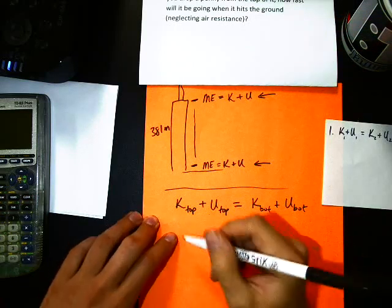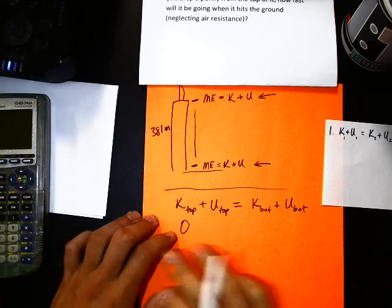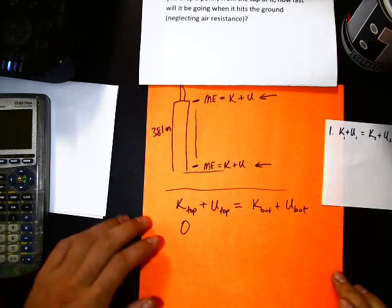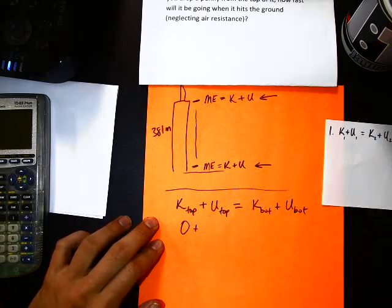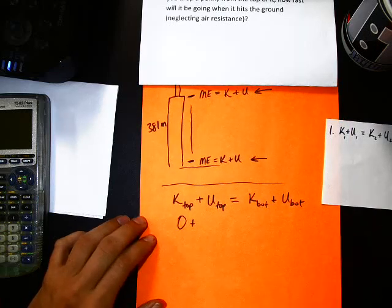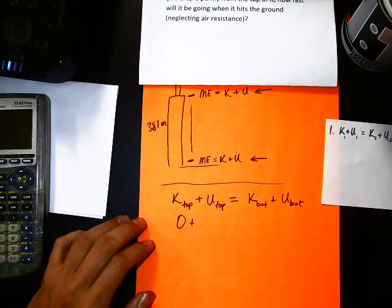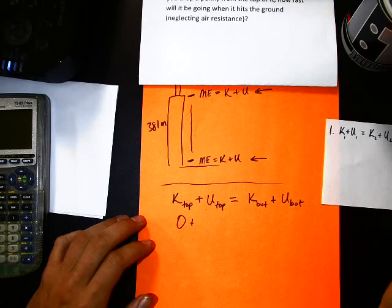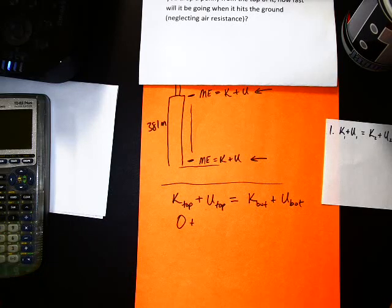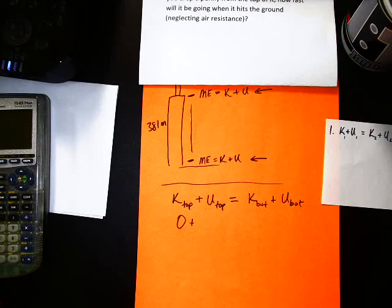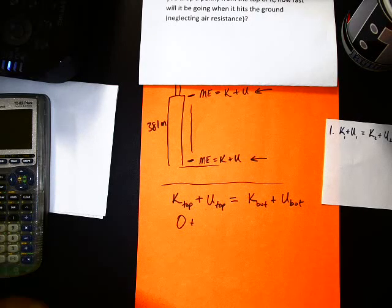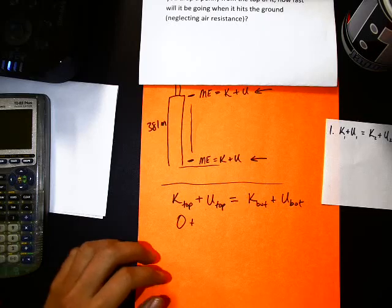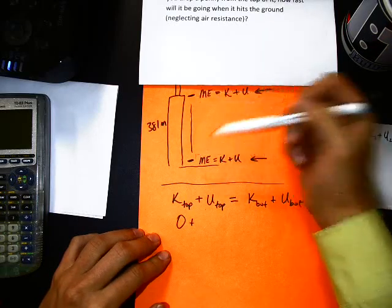Now, we go through each of these K's and U's, and we're going to substitute them with either a zero, or the appropriate method to find kinetic or potential energy. For instance, at the top, is there kinetic energy? What has to happen for there to be kinetic energy? Kinetic energy is energy in motion, so it has to be moving. Is the penny moving at the top? No, it is not. So is there kinetic energy? No. So zero, there's no kinetic energy, because it's not moving yet.